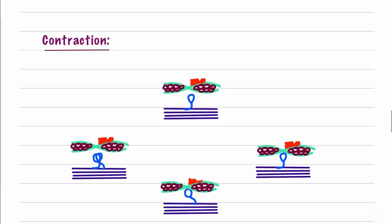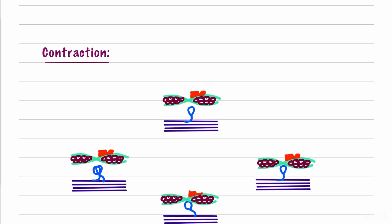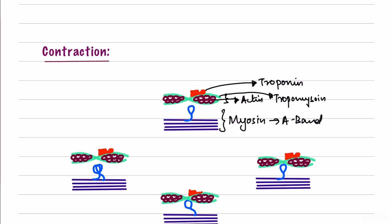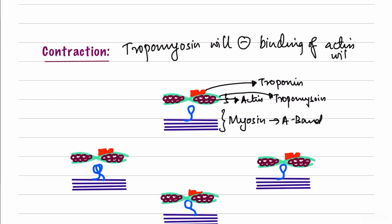Before contraction begins, the myosin forms the A-band and the I-band consists of actin, spirally-shaped tropomyosin, and troponin on top. Before contraction, tropomyosin prevents the binding between actin and myosin. For contraction to occur, actin must bind with myosin and the myosin head must be pulled inward — so the first step is to relieve this inhibition.